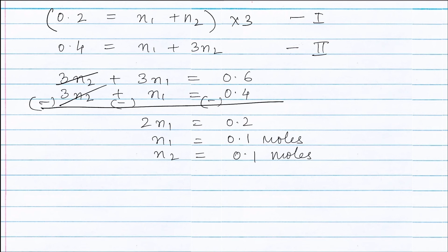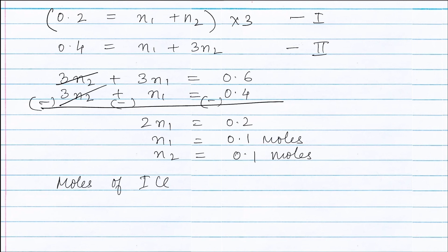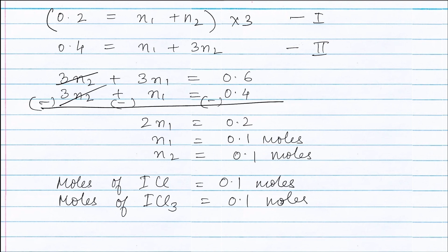Therefore, moles of ICl = 0.1 moles and moles of ICl3 = 0.1 moles.